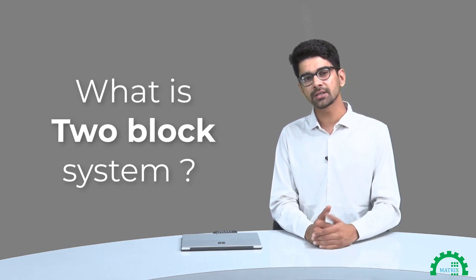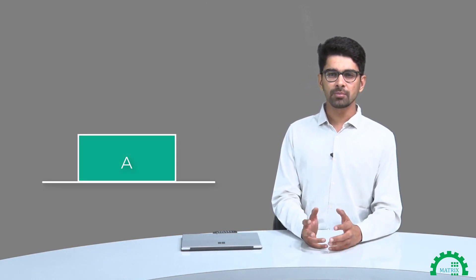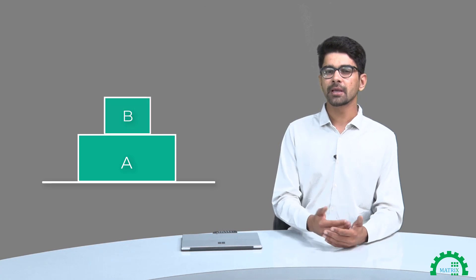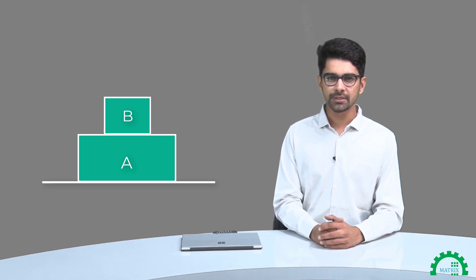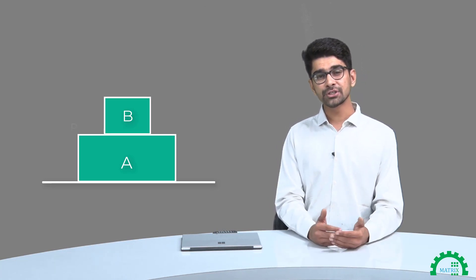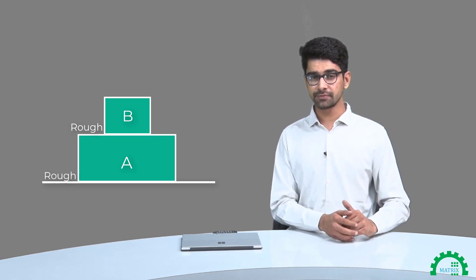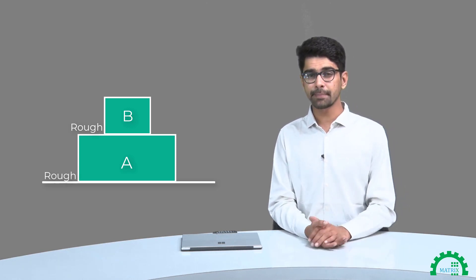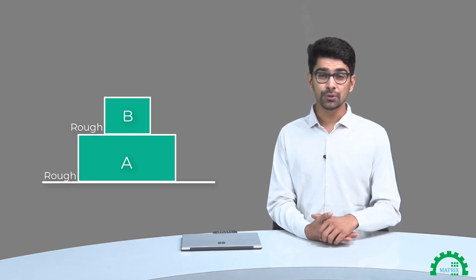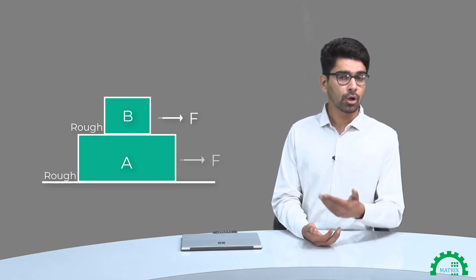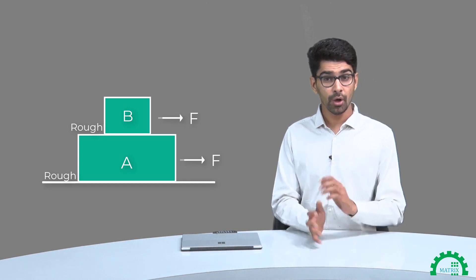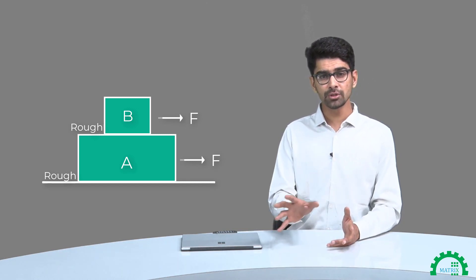As the name suggests, in the 2-block system we will have 2 blocks. We'll keep one block on a surface and another block will be kept on top of it. We can have friction between the 2 blocks, or between the lower block and the surface on which it is kept. Forces can be applied on the upper block, on the lower block, or in some cases forces are applied on both the blocks.